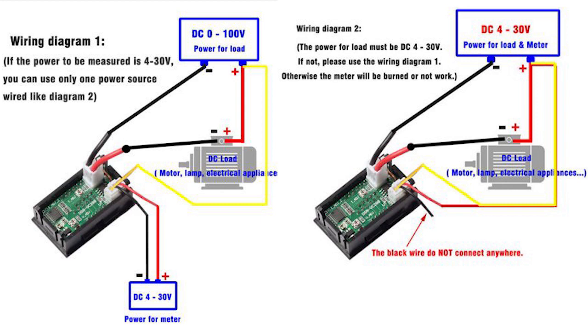Now with wiring diagram two, what you can see there is that the load of what you're connecting up and the meter itself can run off the same power supply and that's the voltage levels between 4 volts and 30 volts. Now you can see how it's wired a little bit differently here but not that dissimilar to the first wiring diagram.